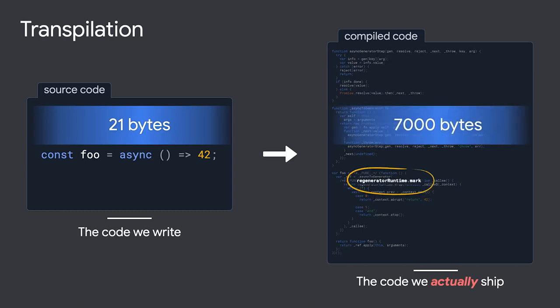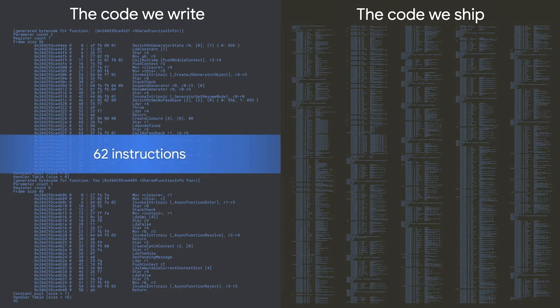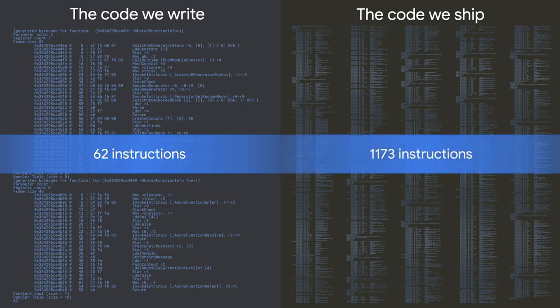Obviously the transpiled code will take longer to load — it's larger — but the dramatically larger compiled code also runs significantly slower once downloaded. JavaScript code gets compiled to instructions executed by a virtual machine, and we can count those to estimate how much work is required. Our original async function compiles to 62 instructions, whereas the transpiled output compiles to over 1,100. We can also benchmark these side by side, and the transpiled version executes more than six times slower.